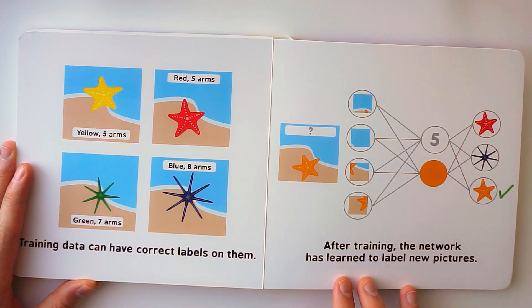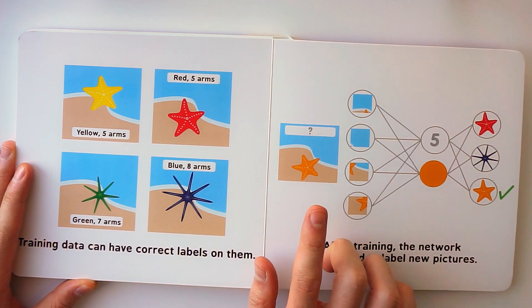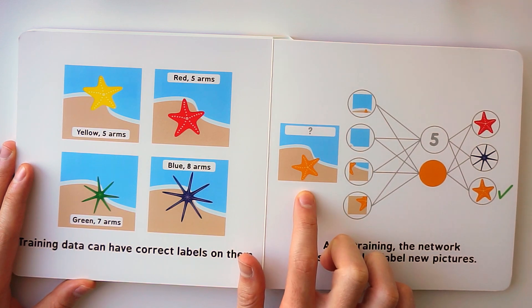Now we can classify. After training, the network has learned to label new pictures. What is this? This is a yellow five-armed starfish.